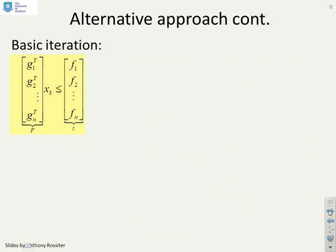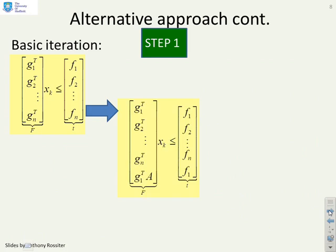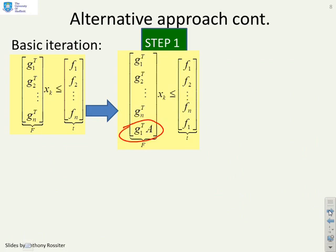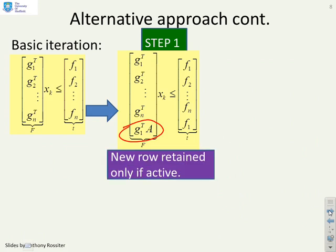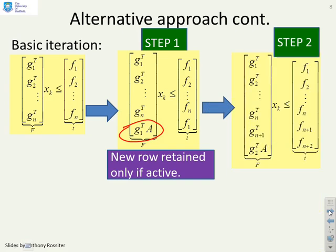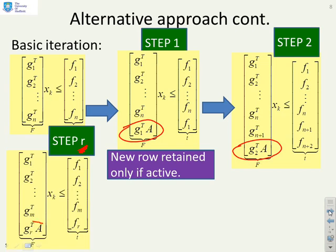Here's the basic iteration. We start with our sample constraints. Step 1, we add a single extra row, g_1^T*A, and say is this row needed or not? We retain it only if it's active. If not active, we get rid of it. Step 2, now I add g_2^T*A and again say is this active, do I need it, and so on. Each step I'm just adding one extra row and checking it. If I take myself forward to step r, then in step r I'm adding g_r^T*A. You see a very simple iteration here - just add one row at a time.